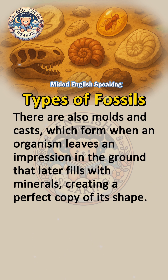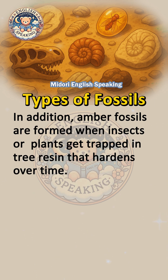There are also molds and casts, which form when an organism leaves an impression in the ground that later fills with minerals, creating a perfect copy of its shape. In addition, amber fossils are formed when insects or plants get trapped in tree resin that hardens over time.